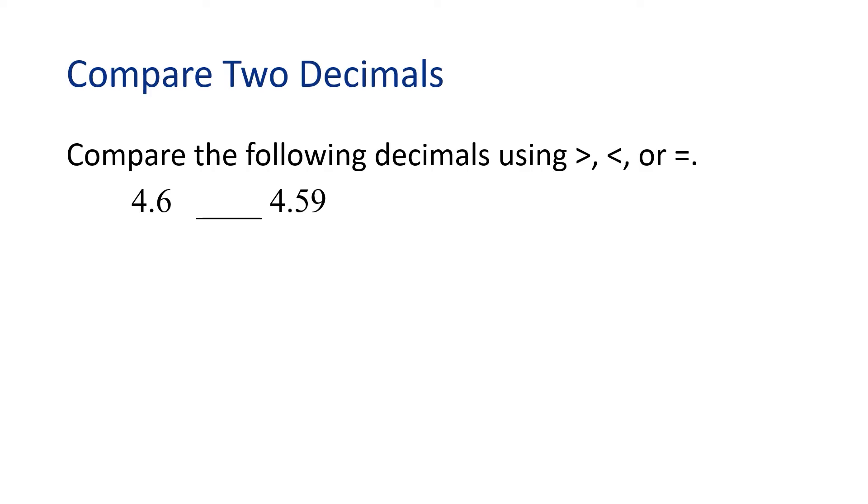Let's compare 4 and 6 tenths to 4 and 59 hundredths. Notice how both numbers have the same whole number value? This means we will compare their decimal parts. Before we do that, we need to make sure both numbers have the same place value. The first number has one decimal place where the second number has two decimal places.